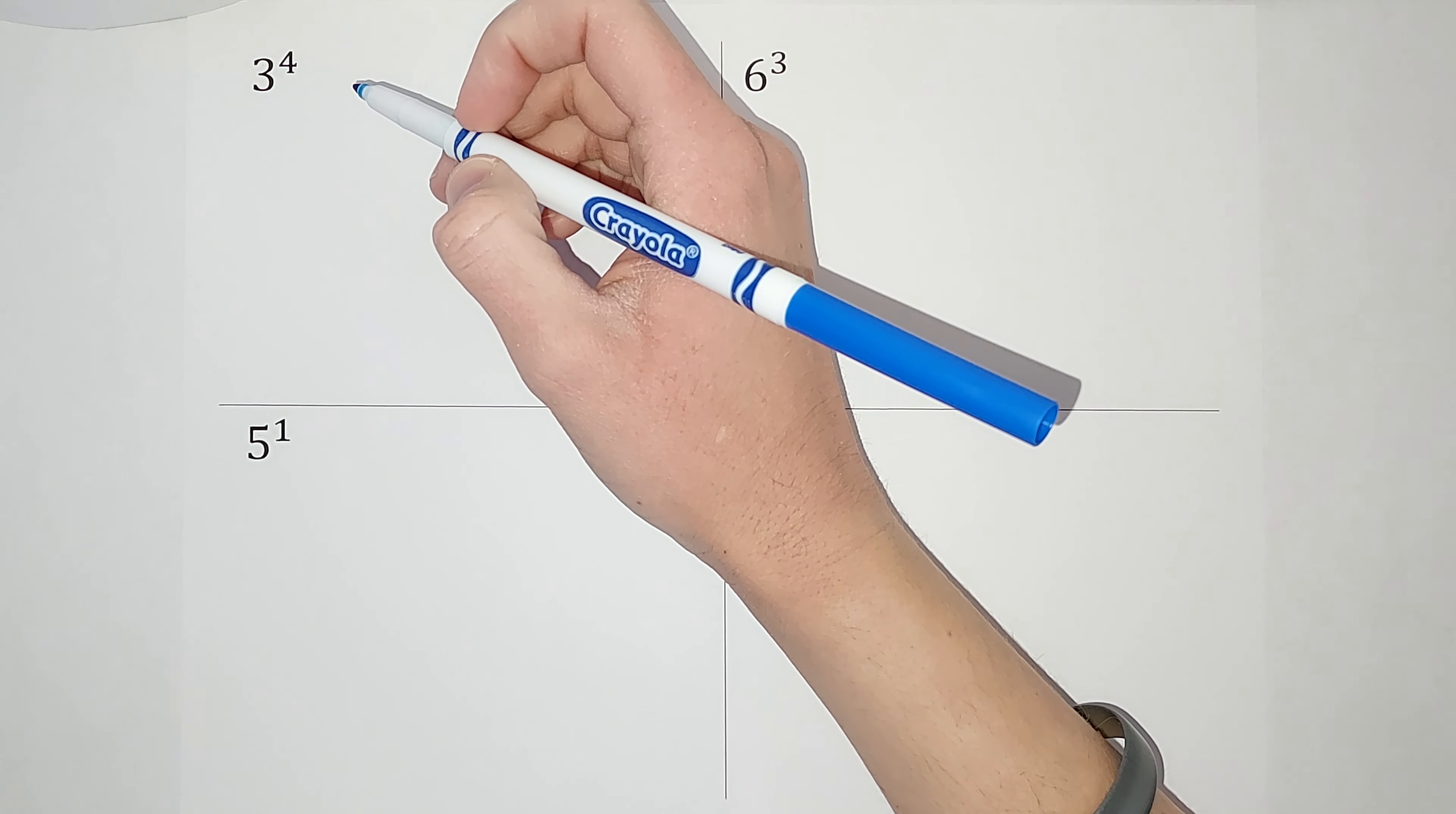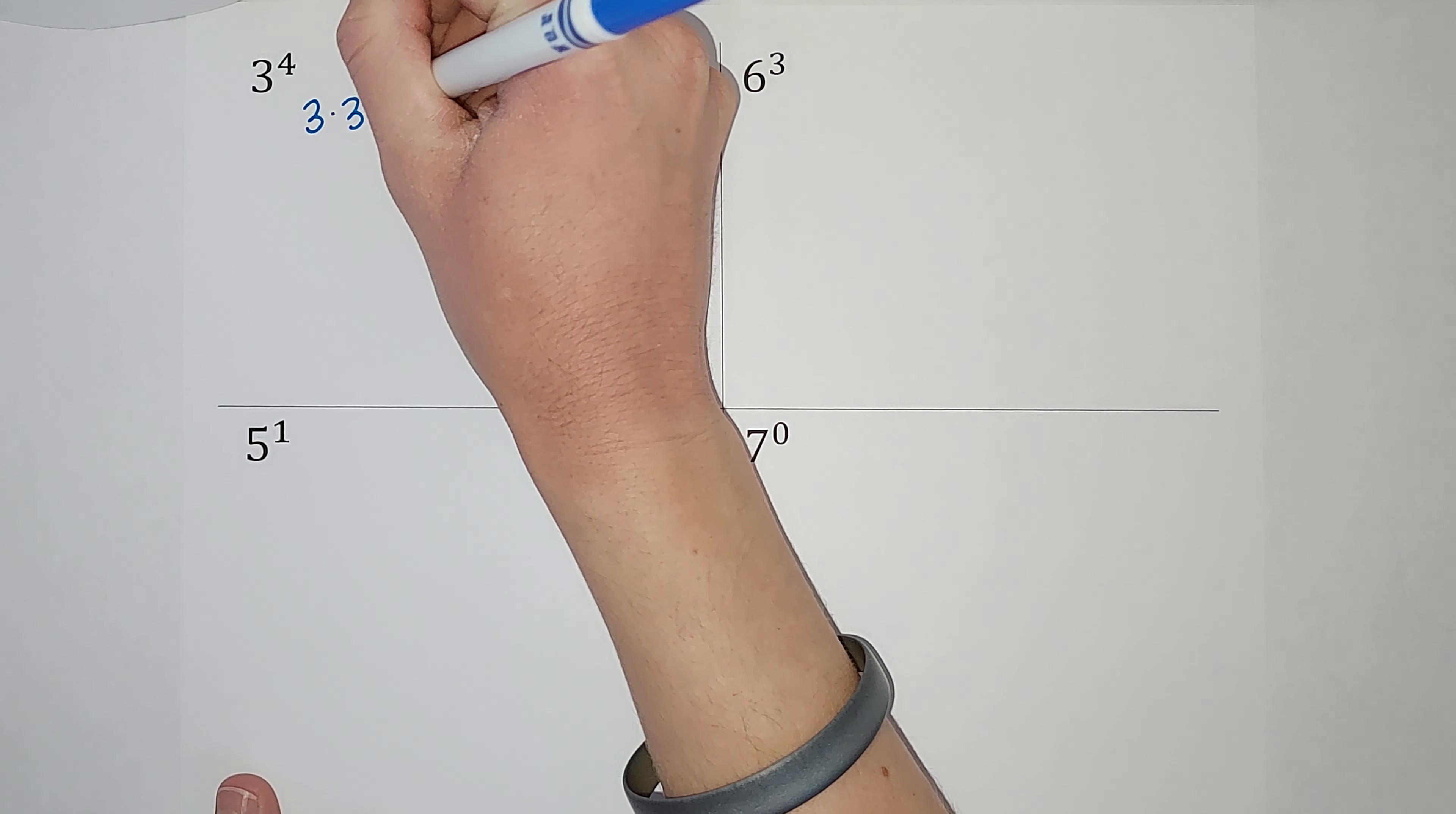This does not mean three times four. This means three times itself four times. So it looks like this: three times three times three times three.